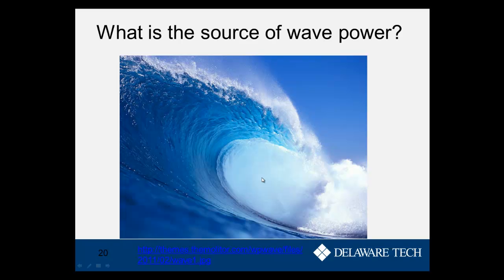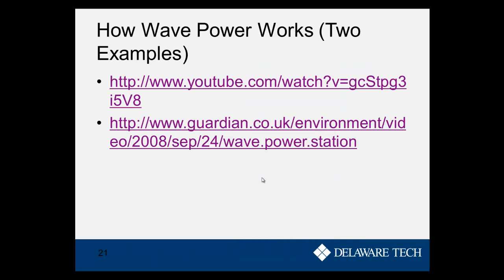Now that we're done with hydropower, let's talk about wave power. The source is waves — you can move something up and down with a wave passing through. Think about bobbing in the ocean: each time you go up you're gaining gravitational potential energy, and falling back down you lose that energy. If we can capture that up-and-down motion, that's the source of wave power. Let me show you two videos to illustrate how this works.